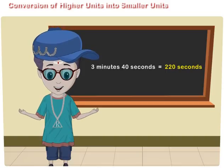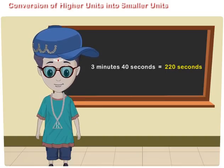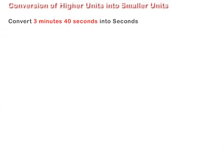Conversion of higher units into lower units. Let us convert 3 minutes 40 seconds into seconds. Here, 3 minutes 40 seconds is 3 minutes plus 40 seconds.